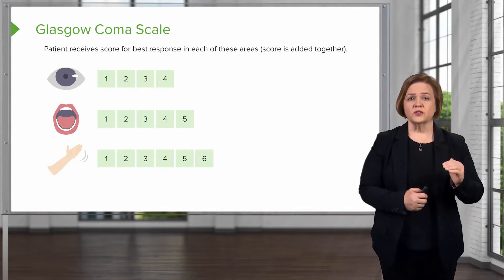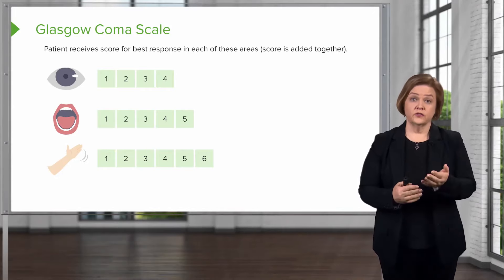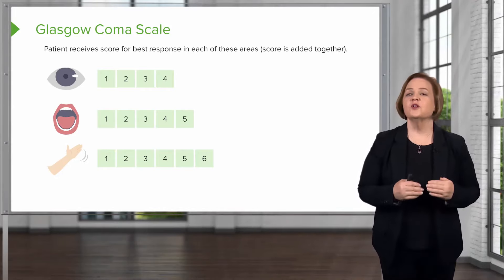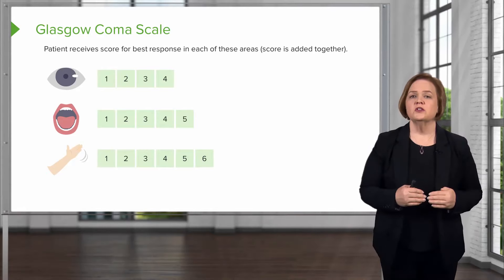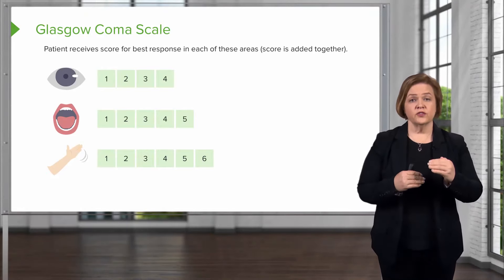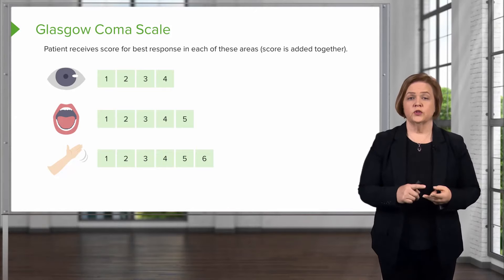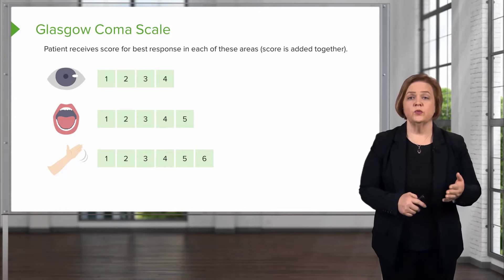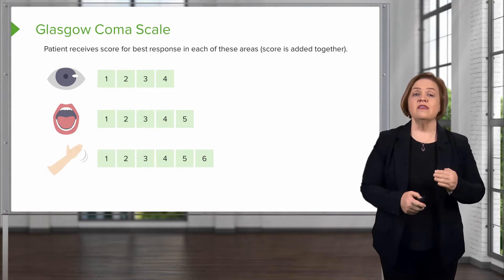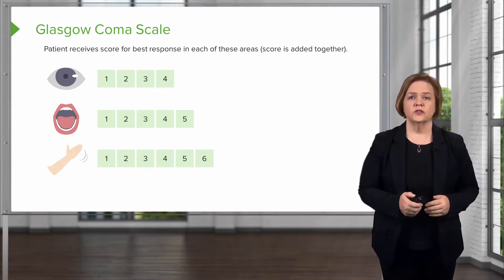Patients get a score because you assess them and give a score for their best response in each one of these areas. Then you add the three scores together — you assess their eyes, their verbal response, and their motor response, give each a score, add them together, and that is their total Glasgow Coma Scale score.